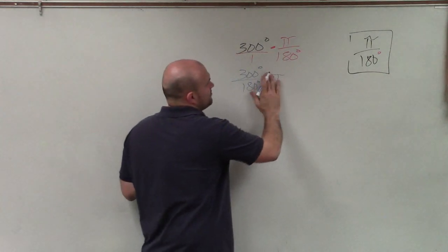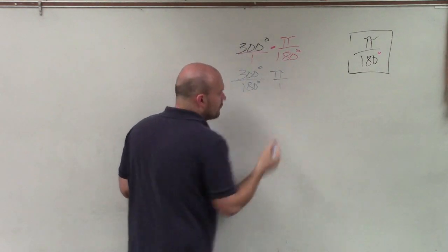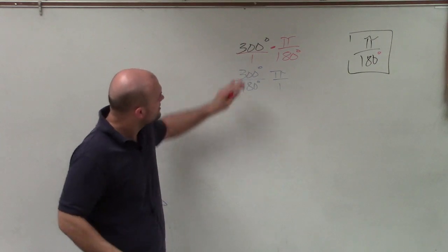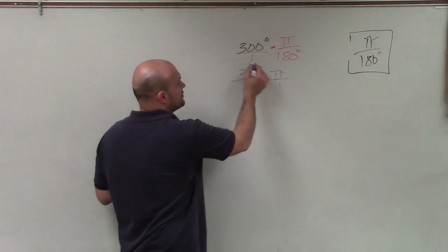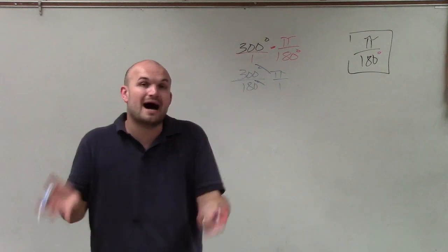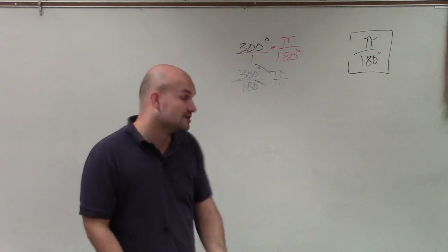Essentially, pi is really pi over 1, but a lot of times we just like to write it in there. Now, let's go ahead and simplify. The unit degrees is now going to divide out, so we're left with pi, which tells us that our answer is going to be in radians.